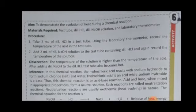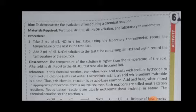To demonstrate the evolution of heat during a chemical reaction, the materials required are: a test tube, dilute HCl, dilute sodium hydroxide solution, and a lab thermometer. Take 2 ml of dilute hydrochloric acid in a test tube and record the initial temperature using the thermometer. Then add 2 ml of dilute sodium hydroxide solution to the same test tube and record the temperature again. You will see the temperature rises — the solution becomes hotter after adding sodium hydroxide to the hydrochloric acid.